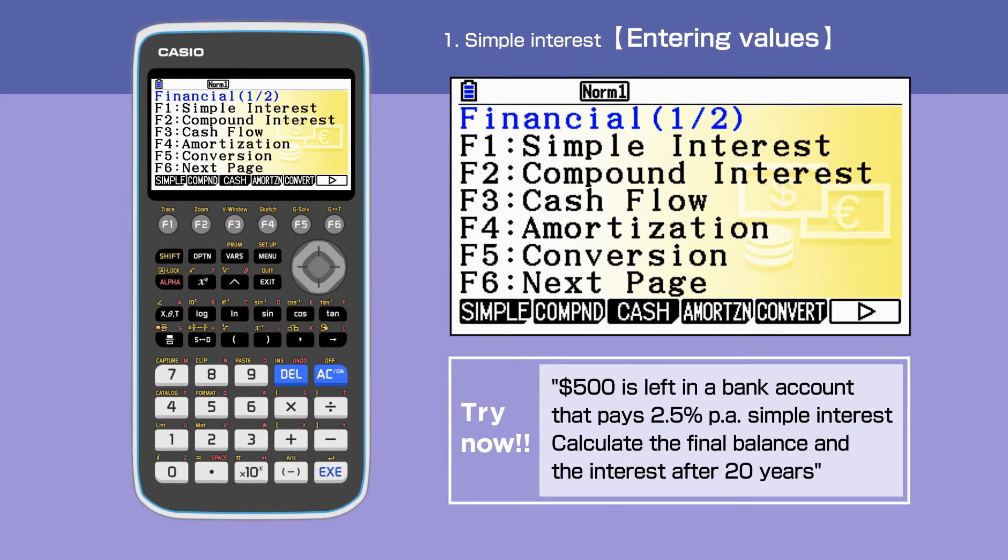Let's look at the following example. $500 is left in a bank account that pays 2.5% per annum simple interest. Calculate the final balance and the interest after 20 years.